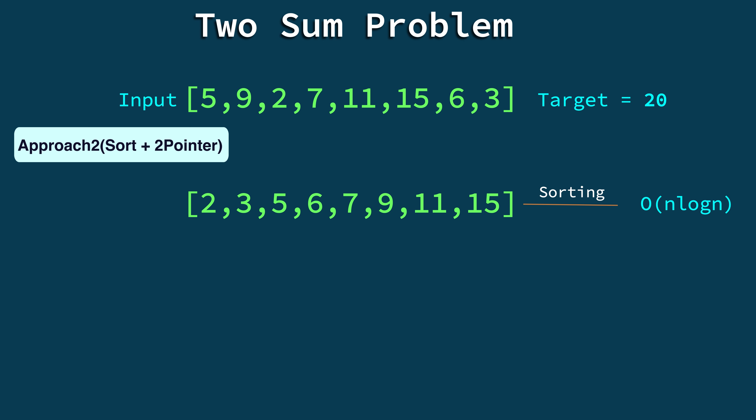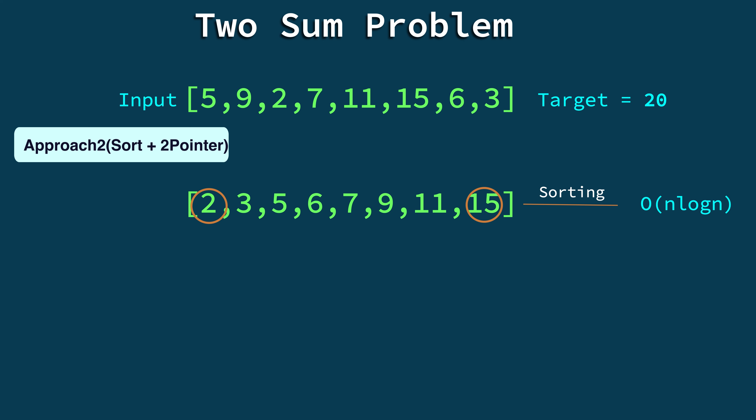We can replace binary search with a two-pointer technique, which reduces the search part from O(n log n) to O(n). The overall complexity remains O(n log n) due to sorting. For the two-pointer approach, we start with one pointer at the first element and one at the last. We move them toward the middle: if the sum is less than the target, move the left pointer right; if greater, move the right pointer left. We continue until the sum equals the target.